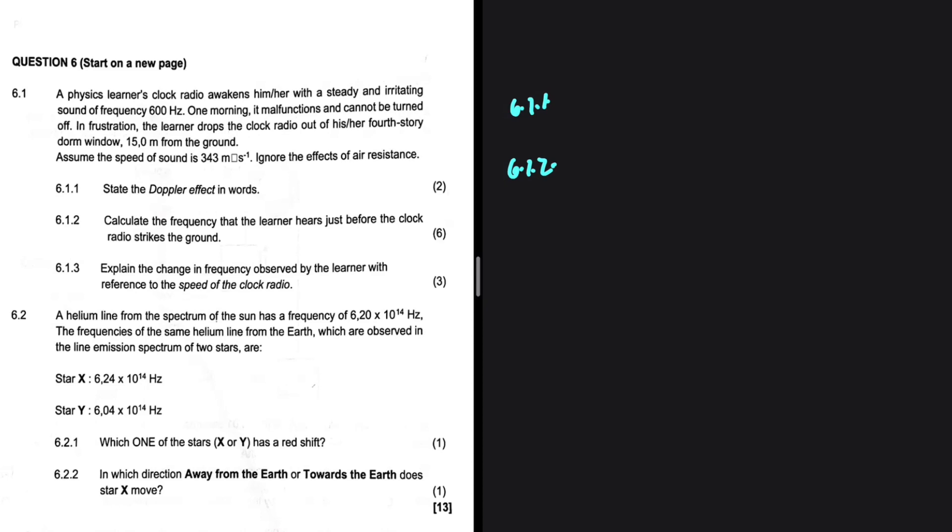Calculate the frequency that the learner hears just before the clock radio strikes the ground. So the frequency observed by the learner will be FL = (V ± VL) / (V ± VS) × FS, the frequency of source. We have 600, so there is no problem there whatsoever.